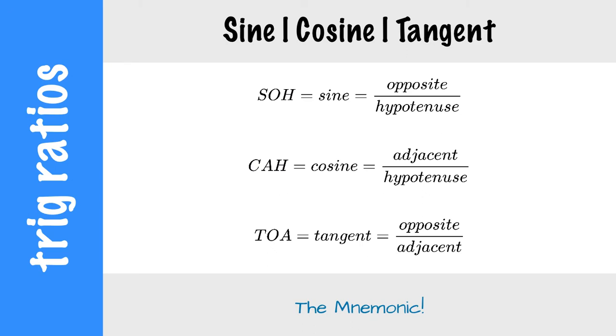Now SOHCAHTOA is a mnemonic, a simple memory tool. So SOH, the first letter means sine, and then opposite over hypotenuse.